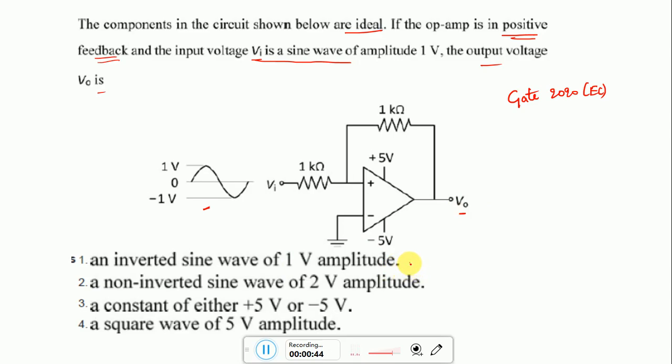An inverted sine wave of 1V amplitude, a non-inverted sine wave of 2V amplitude, a constant of either plus or minus 5V, a square wave of 5V amplitude. Now this was the question given in GATE 2020 EC.